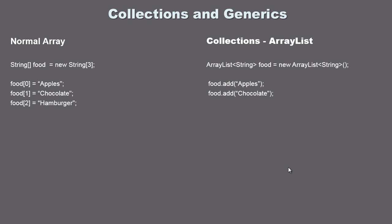In this video we're going to take a beginning look at collections and generics. Collections are very similar to arrays — they do pretty much the same thing, they store items or things. These are of course objects, and I want to talk about the differences between a normal array and a collection because they are very similar.